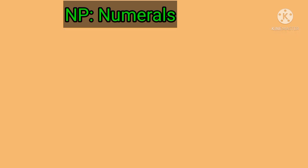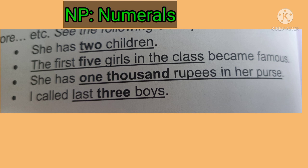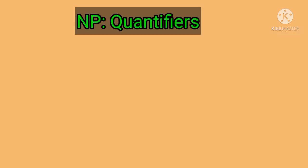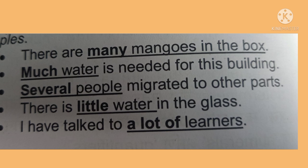Cardinals show number — for example, one, two, three, four, ten, hundred, thousand, lakh, crore. Examples: 'She has two children,' 'The first five girls became famous,' 'She has one thousand rupees in her pocket.' Quantifiers show the quantity of a noun — examples include much, many, few, little, several, lot of, a lot of, ample. For instance: 'There are many mangoes in the box,' 'Much water is needed,' 'Several people migrated,' 'There is little water in the glass,' 'I have talked to a lot of learners.'